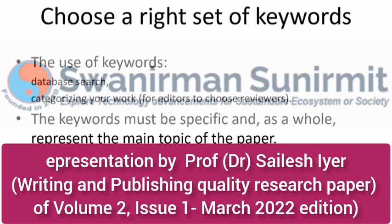Keywords are used for database search, categorizing your work, helping editors choose reviewers, and allowing readers to find relevant content. Keywords should be specific — don't use too many. There should not be 10 to 12 keywords; around six to seven effective keywords is sufficient. Keywords must specifically represent the main topic of your paper. Avoid using words that are not the main topic — like 'calculus' or 'simulation' — as that makes it too broad and your paper may not be found.